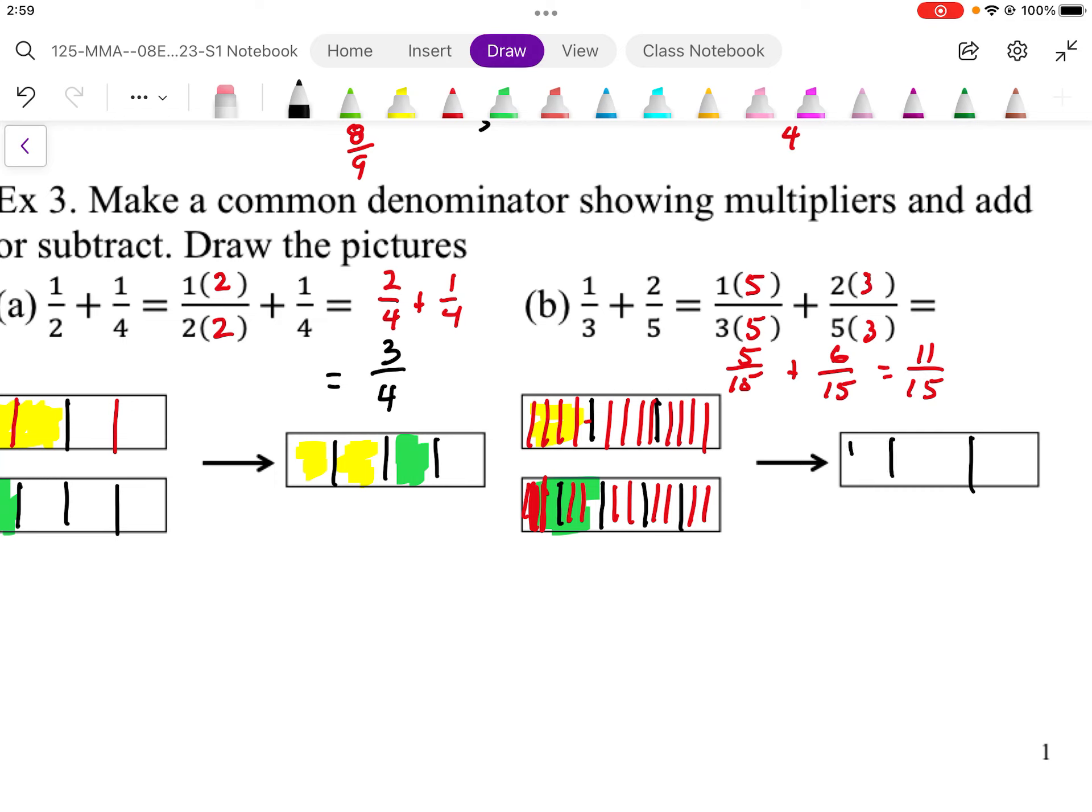I divide these into 5 pieces. And then 5 of those are from the yellow. And 6 of those are from the 1, 2, 3, 4, 5, 6. 6 of those are from the green. And that gives me 11 parts total out of 15.